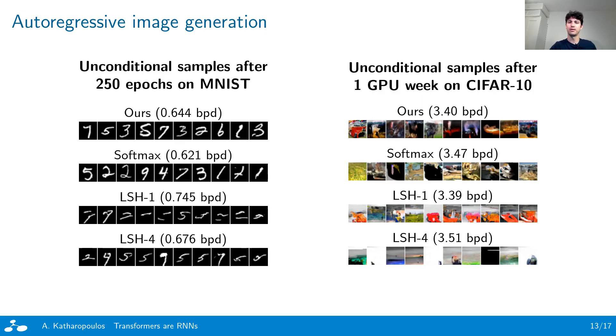On the other hand, on CIFAR-10, where the resources are limited and the number of training iterations is proportional to the method's speed, Reformer with one hashing round and our method achieve similar bits per dimension and perform slightly better than softmax.